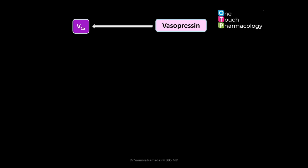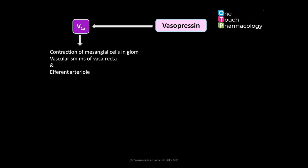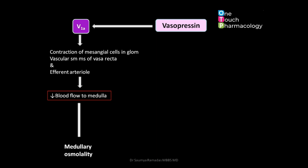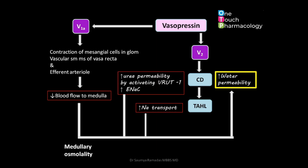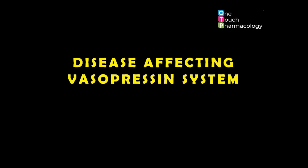Vasopressin also acts via V1a receptors and causes contraction of the mesangial cells in the glomerulus, contraction of the vascular smooth muscles of the vasa recta, and contraction of the efferent arteriole. All these actions decrease blood flow to the medulla and further increase medullary osmolality. In summary, vasopressin acts via V1a and V2 receptors to increase medullary osmolality and enhance water permeability of the collecting duct, thereby aiding in water conservation.